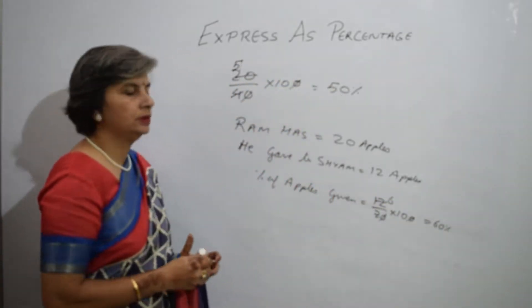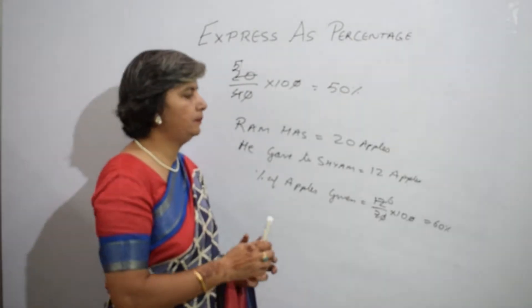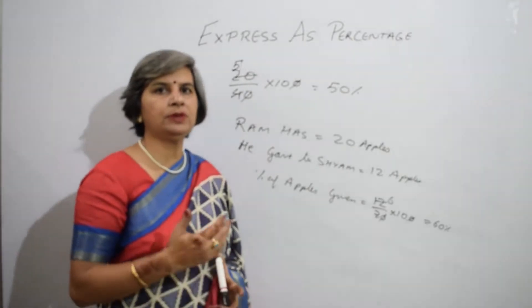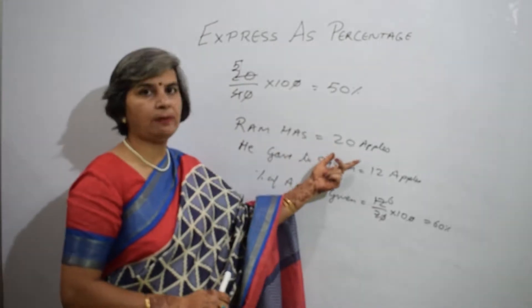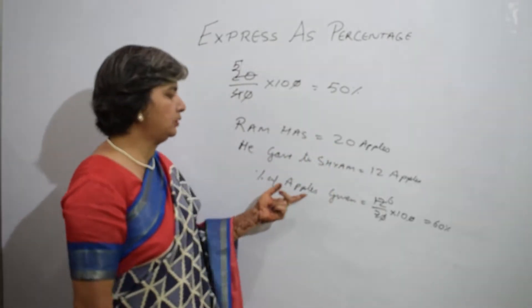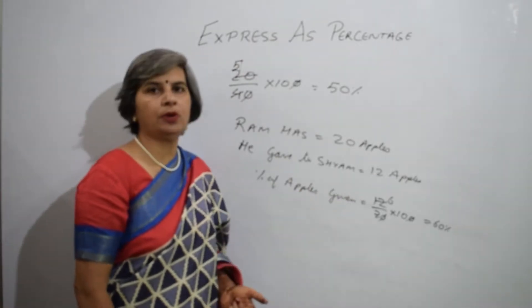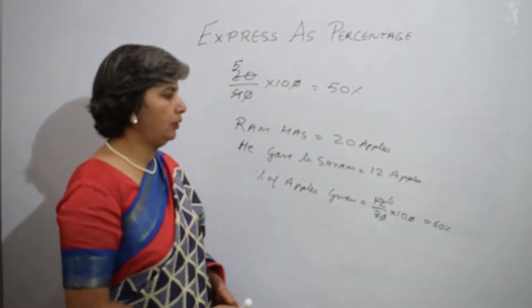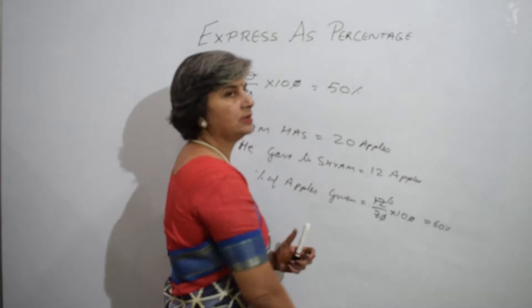So, this is how I calculate the percentage when a value is given. For example, Ram has 20 apples and he has given Shyam 12 apples. The percentage of apples given is 12 upon 20 into 100 and on simplifying I get it as 60 percent.